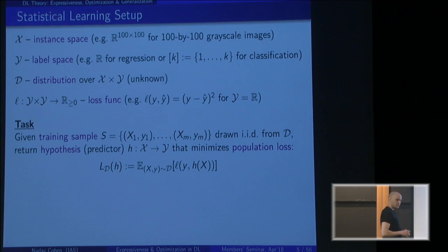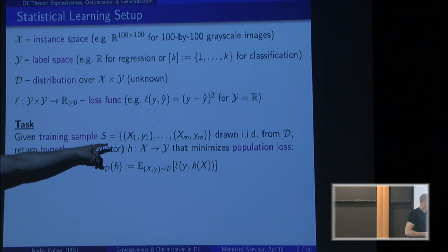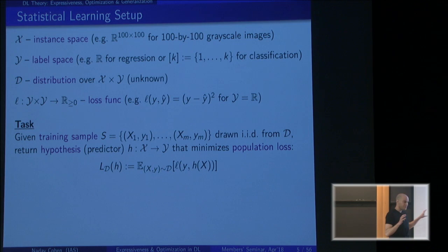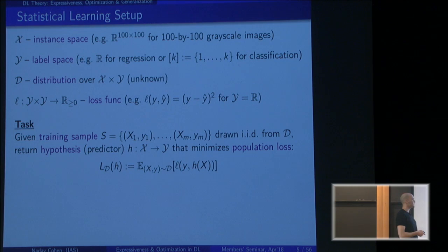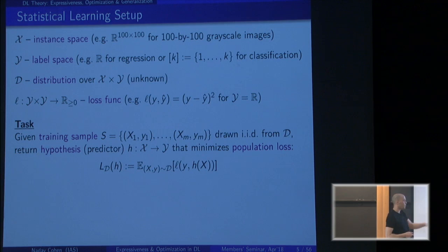The fundamental statistical learning task is the following. We are given a training set — m labeled instances, m pairs of image and label — drawn i.i.d. from distribution D. We don't know D, but we have access to this finite sample. Given this training set, our objective is to return a hypothesis — also called a predictor — a function from instances to labels. We would like to return a function that minimizes the population loss: the average error over distribution D, the expectation of the discrepancy between the true label and our prediction.